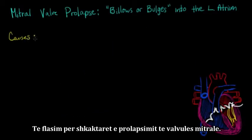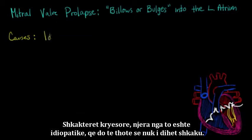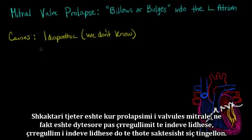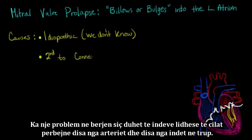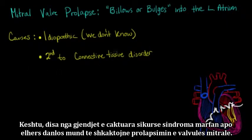The causes of mitral valve prolapse include: one major cause is actually idiopathic, meaning we don't really know what causes it. Another cause is when mitral valve prolapse occurs secondary to a connective tissue disorder — meaning a problem in making proper connective tissues, which make up some arteries and other body tissues. Certain conditions like Marfan syndrome or Ehlers-Danlos syndrome can actually cause mitral valve prolapse.